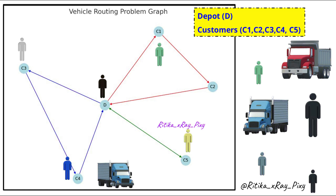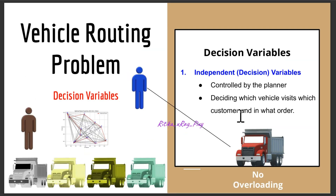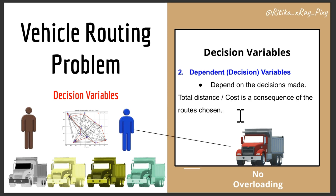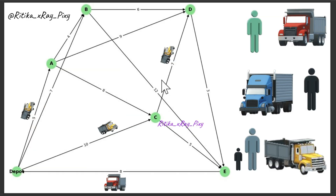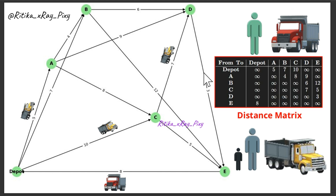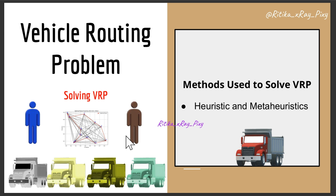The solution is often determined by decision variables. Once the graph is created, we build a distance matrix — a matrix that contains the shortest distance or time between every pair of nodes, such as between two customers or a customer and the depot. As already discussed, VRP is an NP-hard problem and becomes more complex as the number of customers grows, making finding the best solution increasingly expensive.